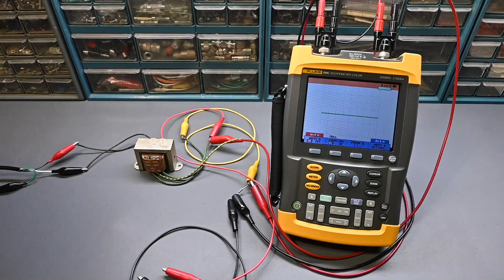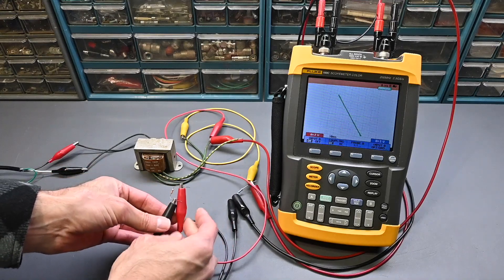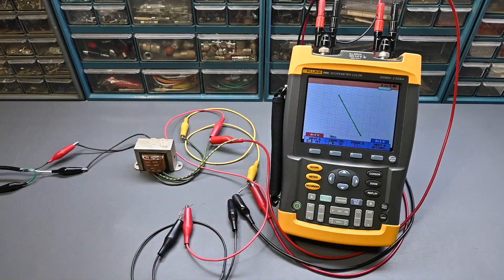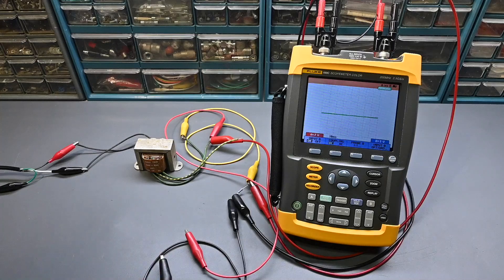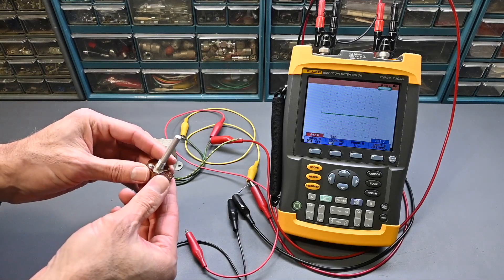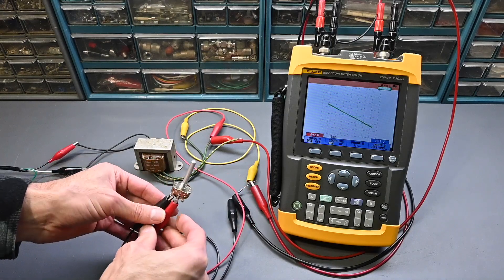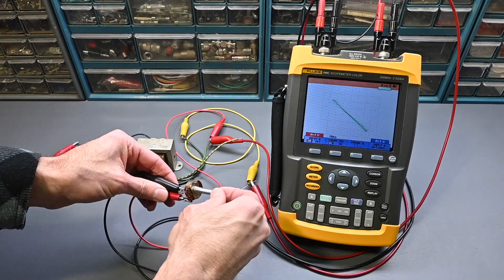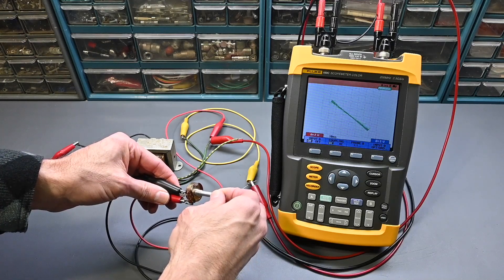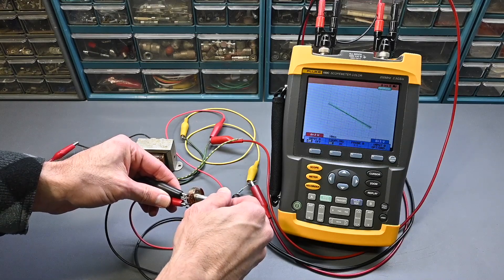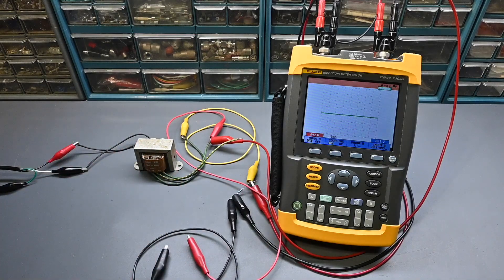Here's a resistor, a 2.2k ohm resistor. Connect that on there. 2.2k ohms, and you can see we have a sloping line. Let's take a look at a potentiometer, this is a 10k potentiometer. I rotate that potentiometer. You can see how it causes that line to rotate.